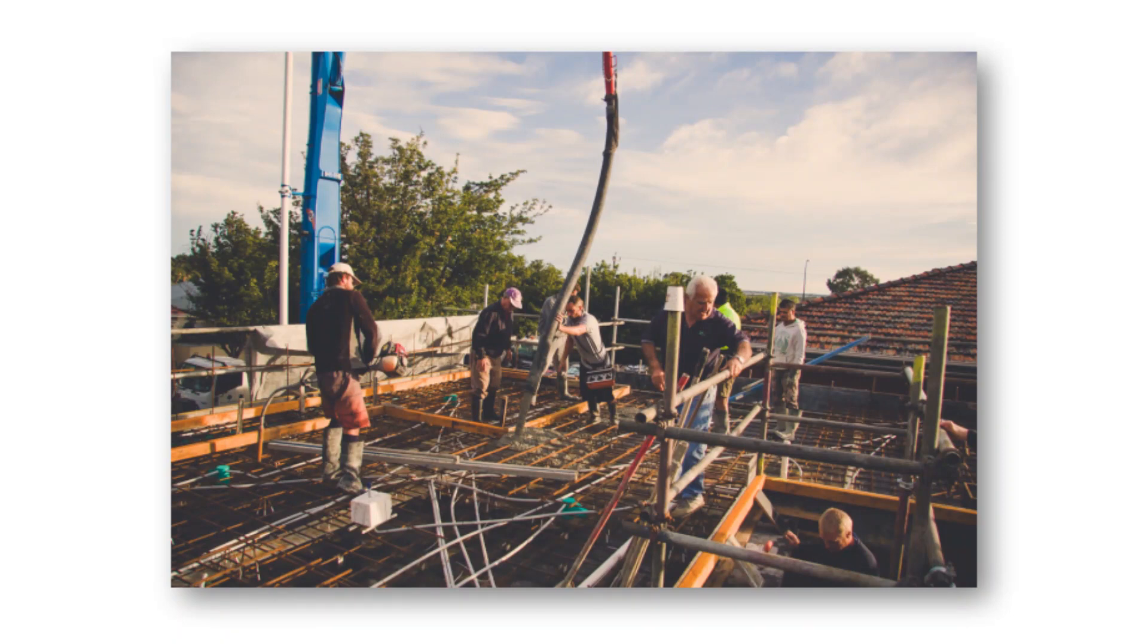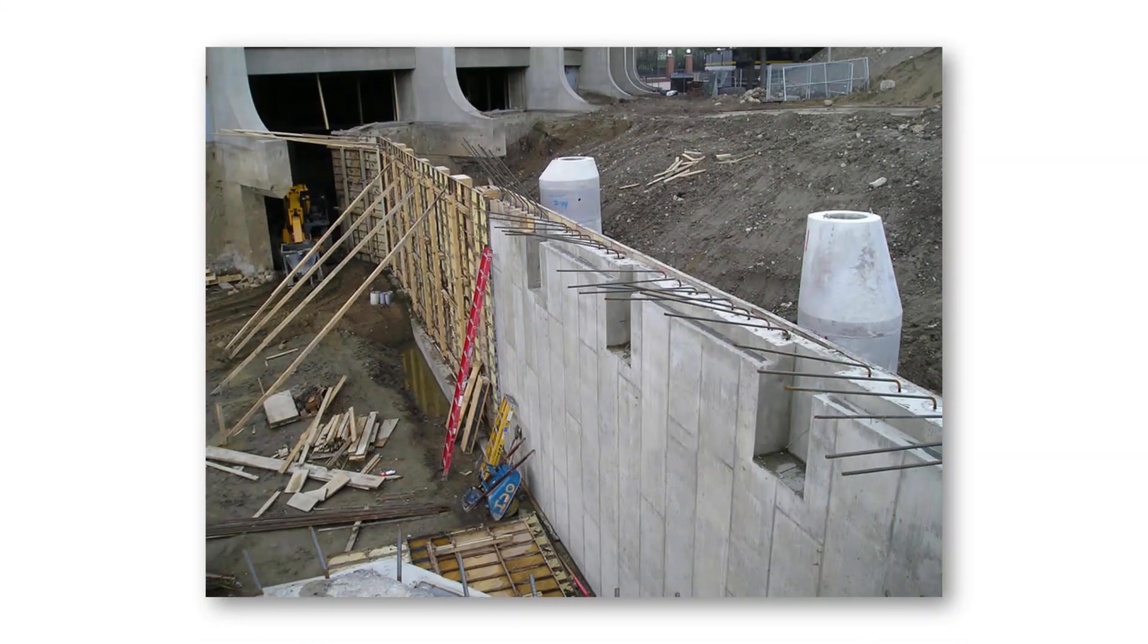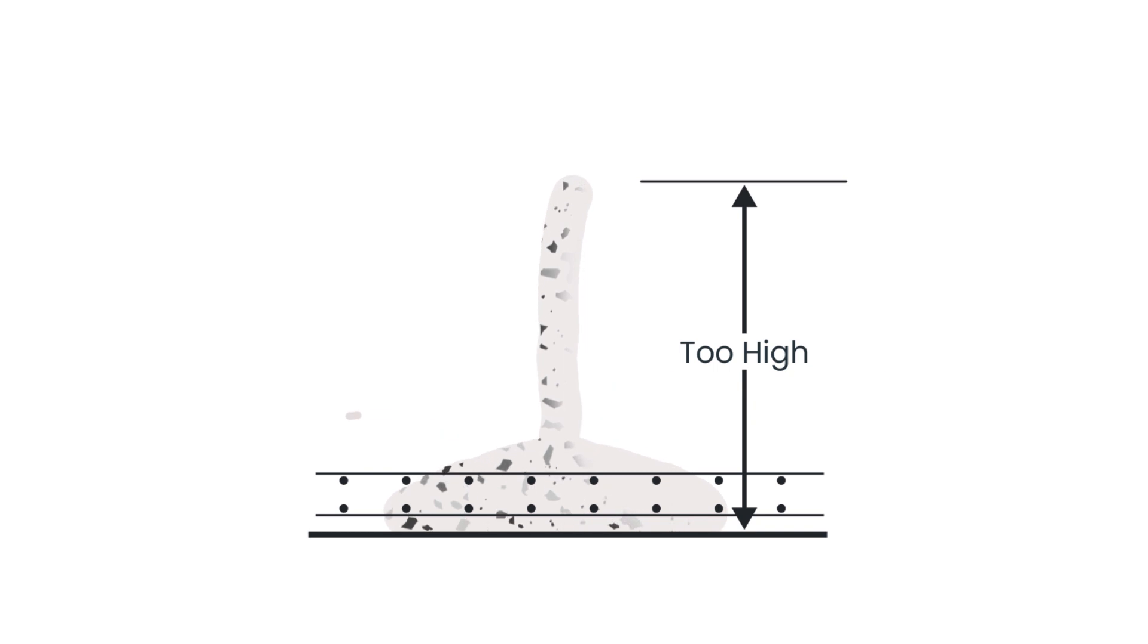For walls and columns, deep narrow forms, problems occur when the concrete is dropped from too great a height and ricochets off the reinforcement and form faces, resulting in segregation.